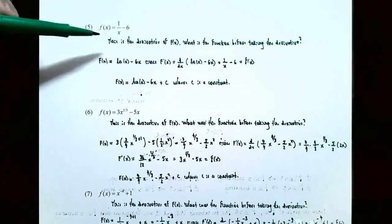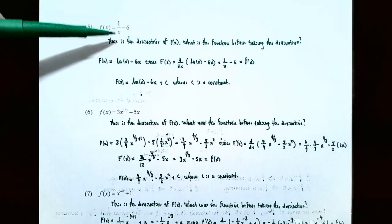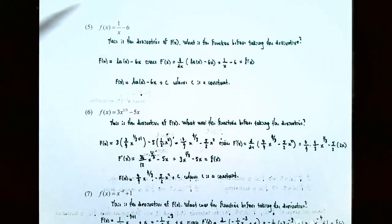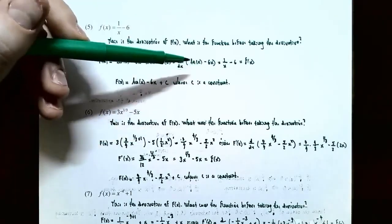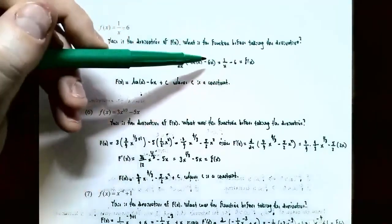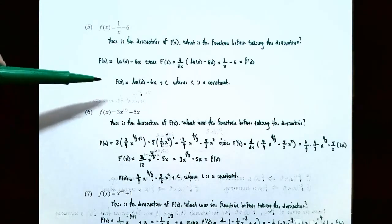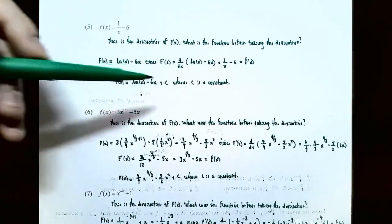Number five, f of x is equal to 1 divided by x minus 6. The function that gives derivative 1/x is the natural logarithm function. So capital F of x must have natural log of x in it. For the term minus 6, the antiderivative is minus 6x. Taking the derivative: the derivative of natural log of x is 1/x, and the derivative of 6x is 6. So we get 1/x minus 6, which was the original function. Capital F of x equals natural log of x minus 6x plus c.